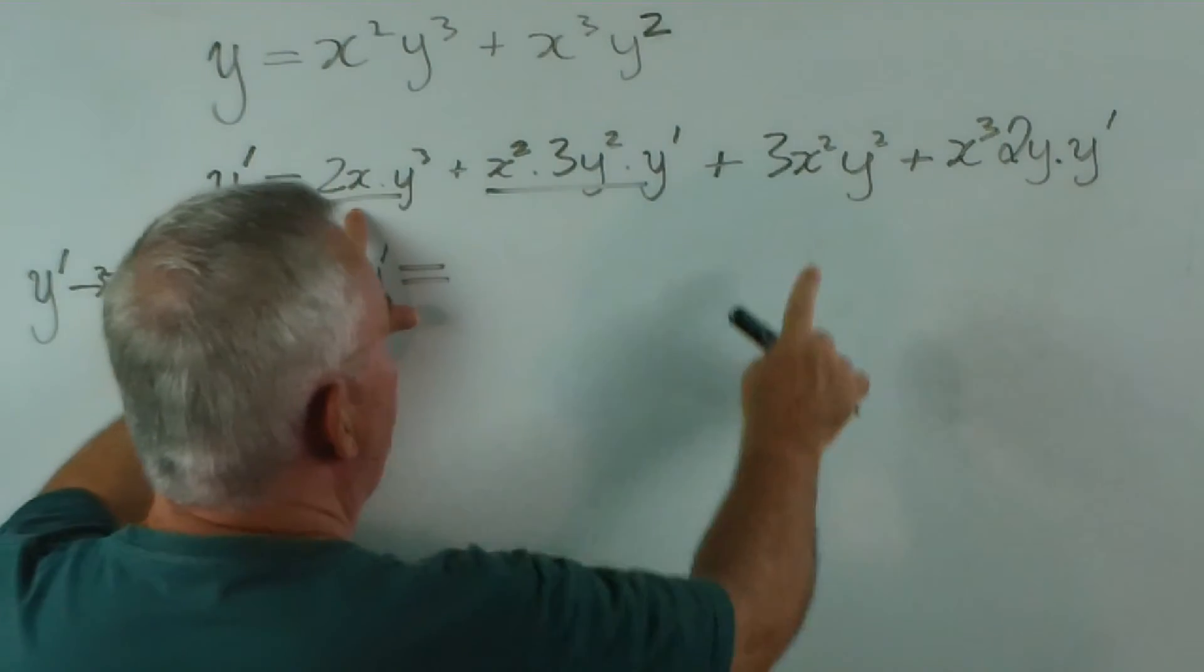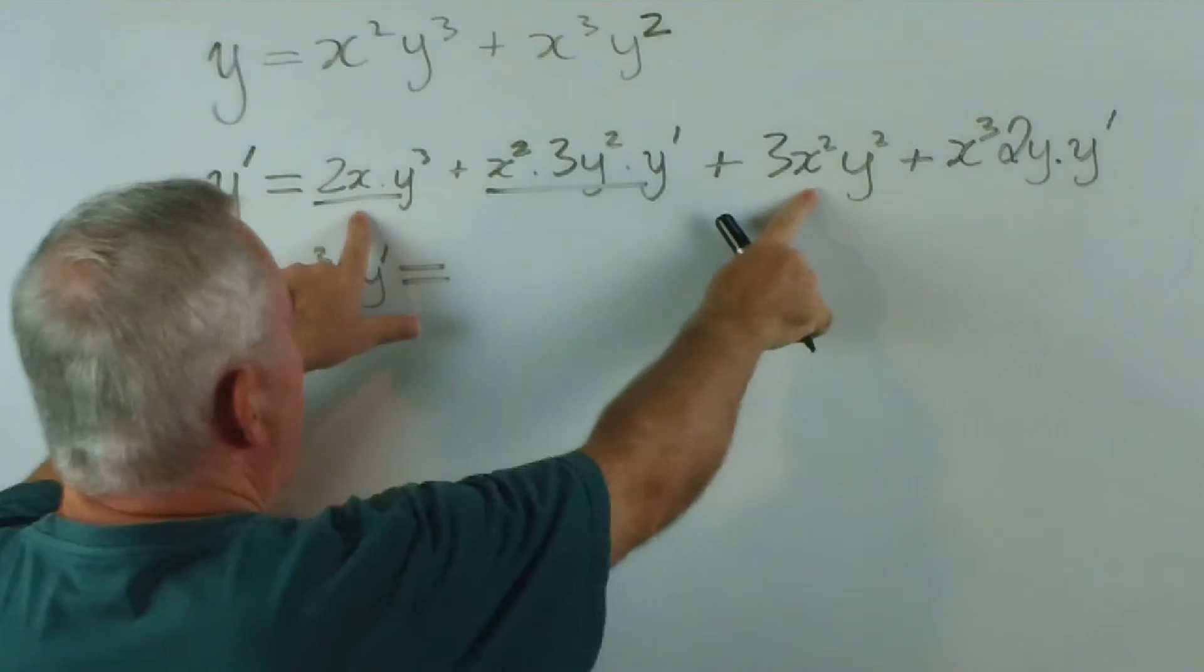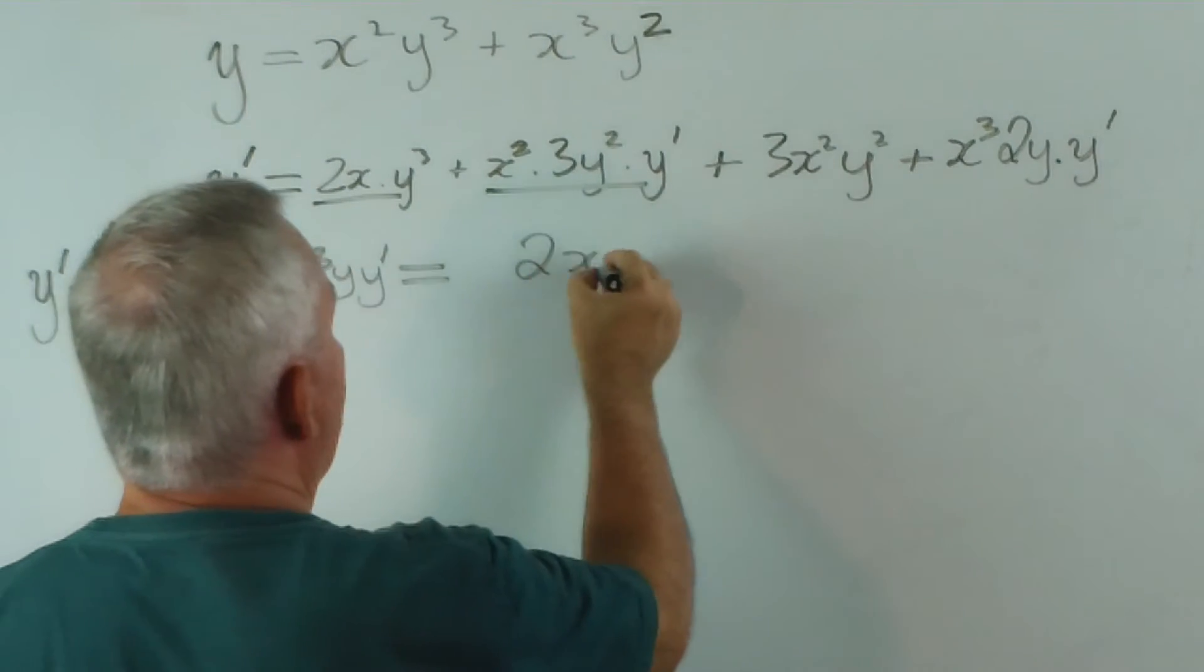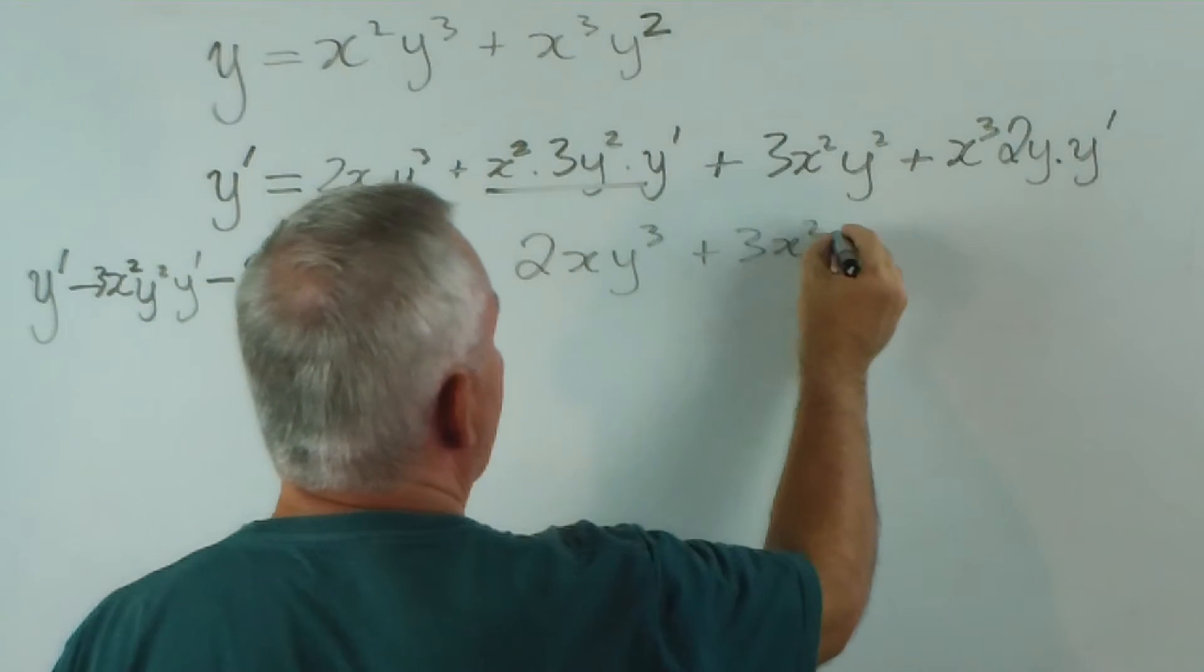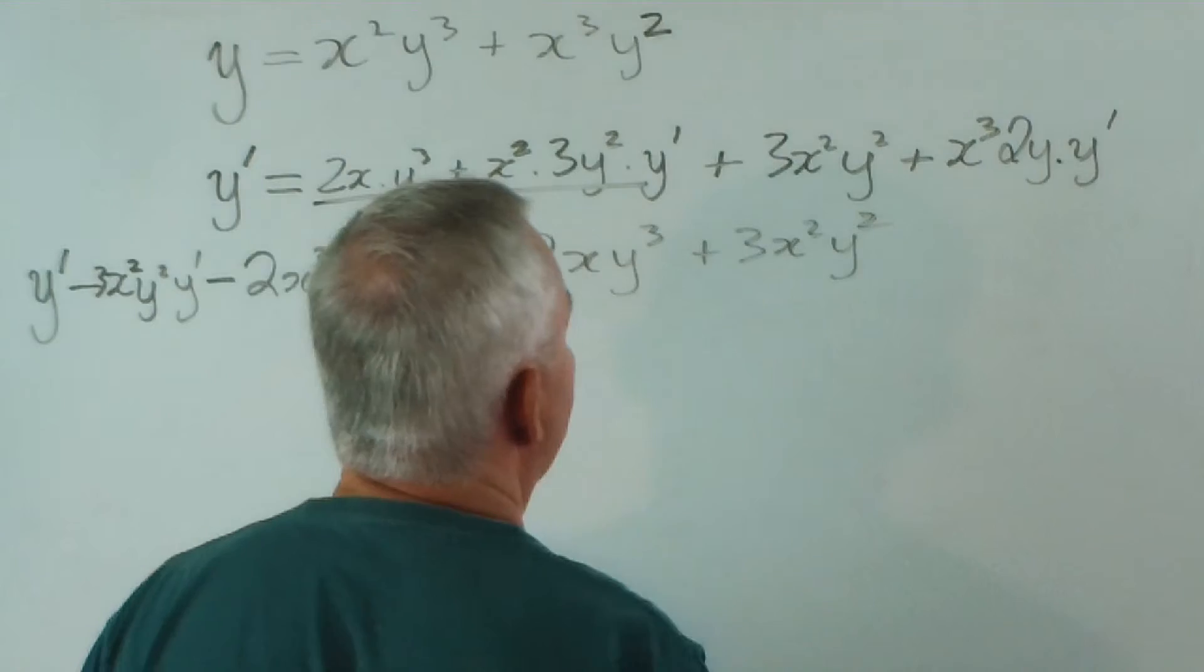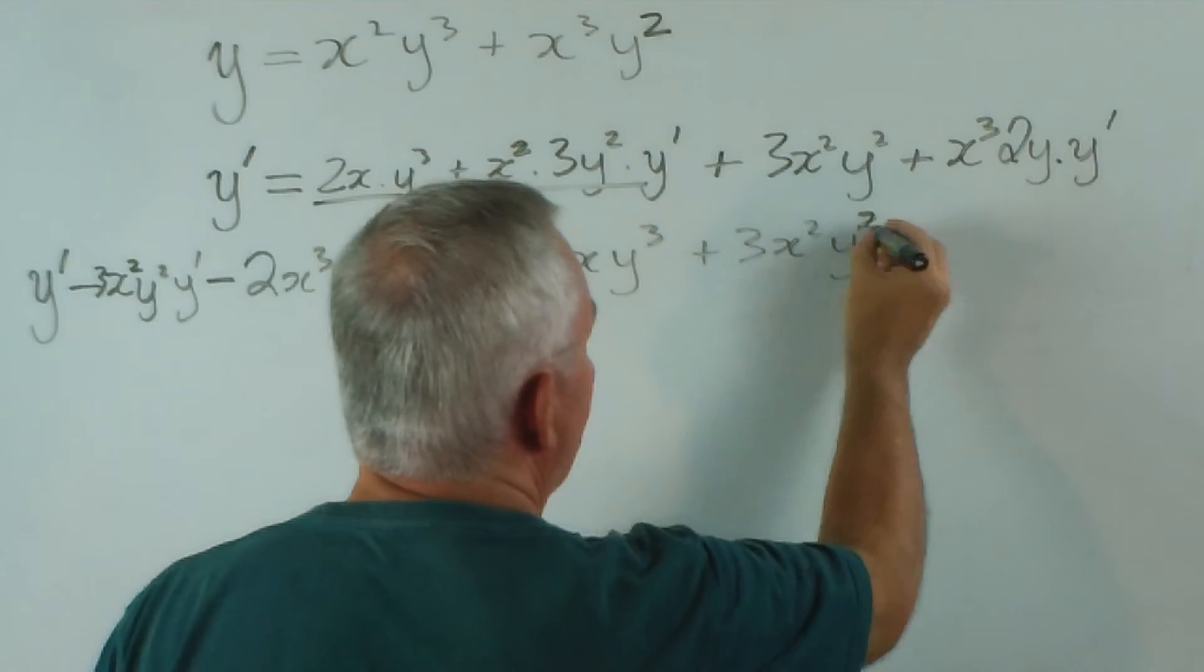What's left? This term and this term did not contain a y dash, so they'll stay here: 2xy cubed plus 3x squared y squared.